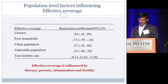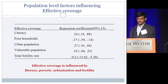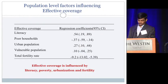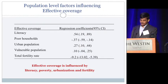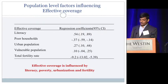In addition to estimating effective coverage, we also studied the association of sociodemographic factors. This regression model showed literacy and urbanization are positively associated with effective coverage, while poverty and fertility were negatively associated with it.